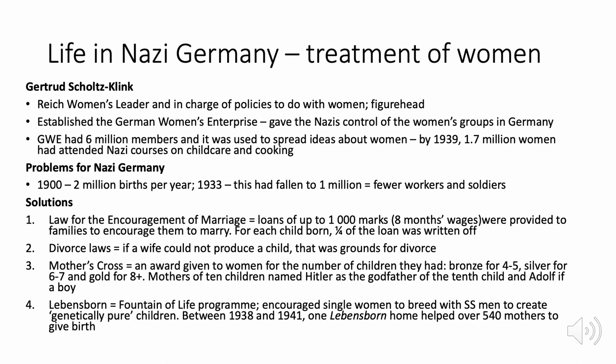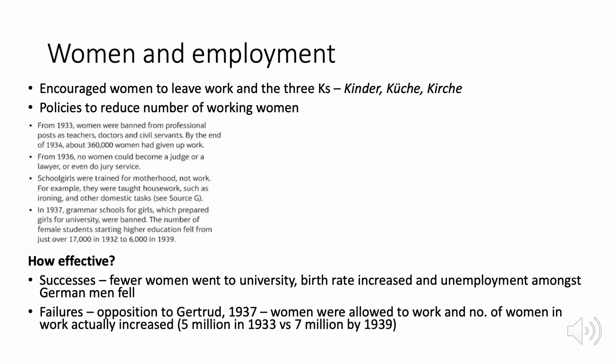Women were initially encouraged to leave work and follow the 'three Ks' — Kinder, Küche, Kirche (children, kitchen, church). Policies reduced the number of working women: in 1933 women were banned from all professional posts, and by 1936 no woman could become a judge or lawyer. This was successful to an extent — fewer women went to university, the birth rate increased, and unemployment among German men fell. However, there were also failures: Gertrud Scholtz-Klink faced significant opposition.